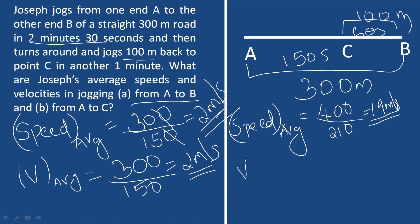For average velocity from A to C, we use net displacement divided by time taken. The net displacement is the shortest straight-line distance from A to C. Since Joseph went 300 meters forward and 100 meters back, the displacement from A to C is 300 minus 100 equals 200 meters. Average velocity equals 200 divided by 210, which is approximately 0.95 meters per second.